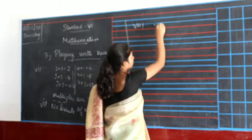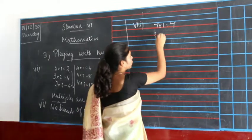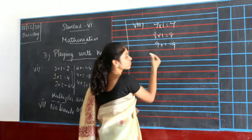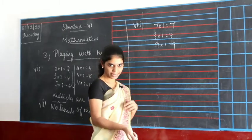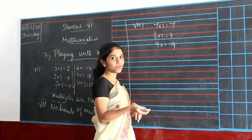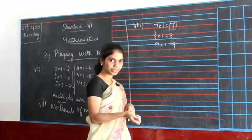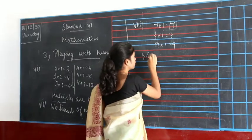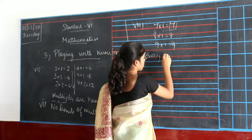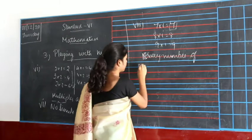The eighth property: you can say 7 into 1 equals 7, 8 into 1 equals 8, 9 into 1 equals 9. So every number is a multiple of itself — every number can be written as a multiple of itself.